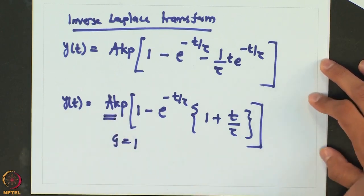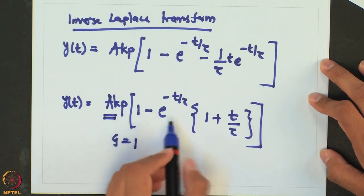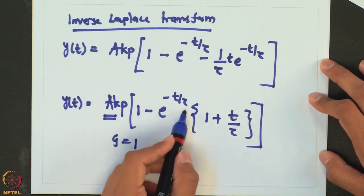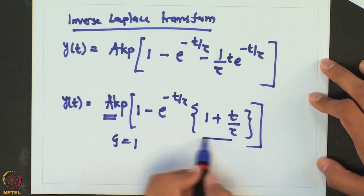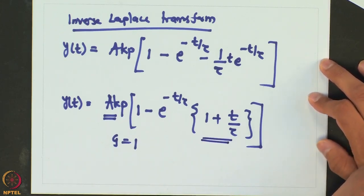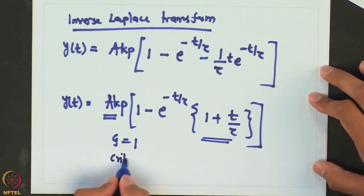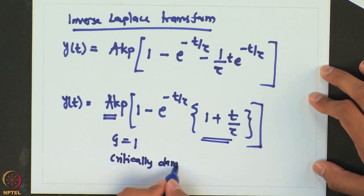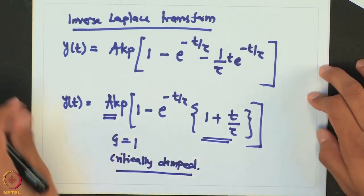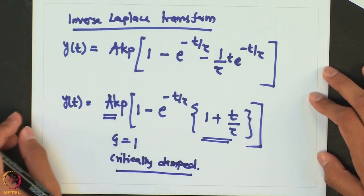This is the response for zeta equal to 1. The form is similar to the overdamped case — the final value is still AKP — and we have 1 minus a decaying exponential, followed by a simple linear function (1 plus t over tau) rather than cosine hyperbolic or sine terms. This case when zeta equals 1 is called critically damped.